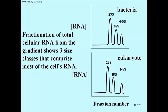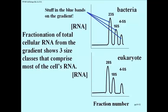So we have 23S, 16S and 4-5S bacterial RNA and 28, 18 and 4-5S eukaryotic RNA. This is RNA extracted from whole cells without regard to where the RNA might have come from. So those peaks then represent the blue bands on a gradient.